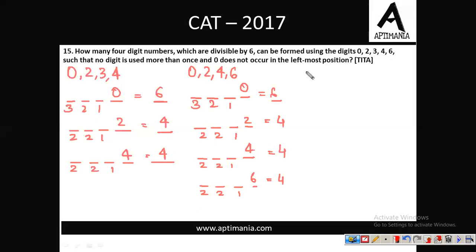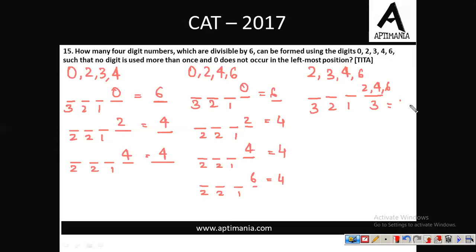Third combination: {2, 3, 4, 6} — sum is 15, divisible by 3. Units digit can be 2, 4 or 6 (3 options). For each choice at units place, we have 3 options for leftmost, then 2, then 1. Total = 3 × 3 × 2 × 1 = 18 numbers.